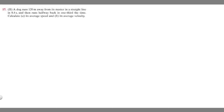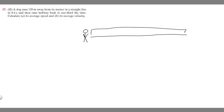The best way to do these types of problems is to draw a diagram to represent it. So we have this guy and his dog runs 120 meters away from him — this line represents 120 meters, so the dog is here now. He goes this distance, which is 120 meters, and runs it in 8.4 seconds.